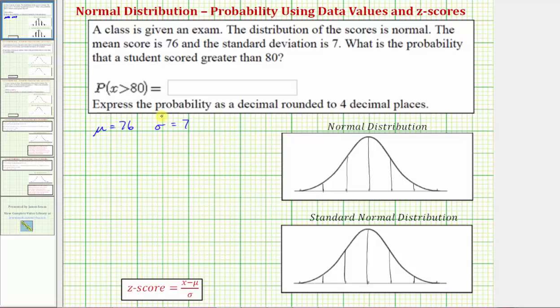Let's first model this situation using the normal distribution curve, where the mean of 76 would be here in the middle, and the horizontal axis is scaled by standard deviations. So to the right of 76, we would have 76 plus seven, which is equal to 83. 83 plus seven, which is equal to 90. And 90 plus seven, which equals 97.